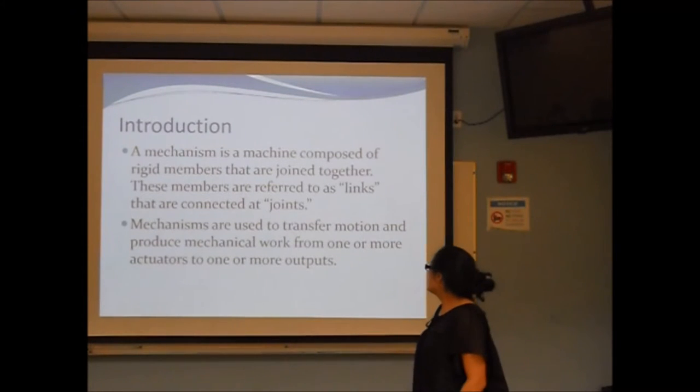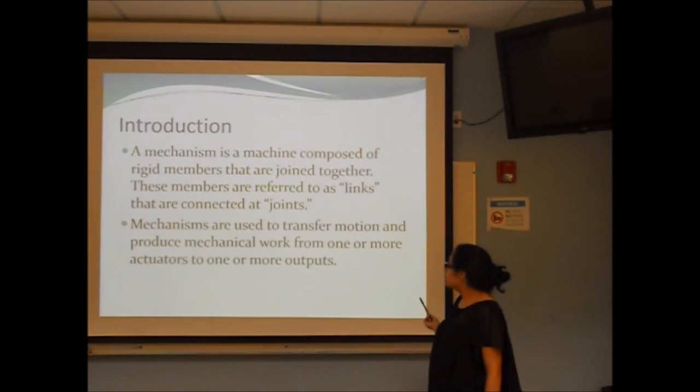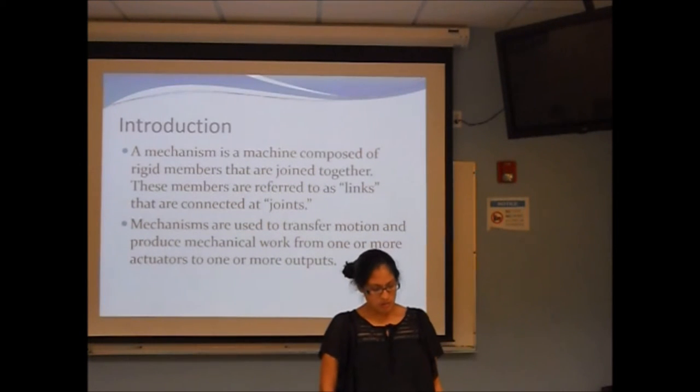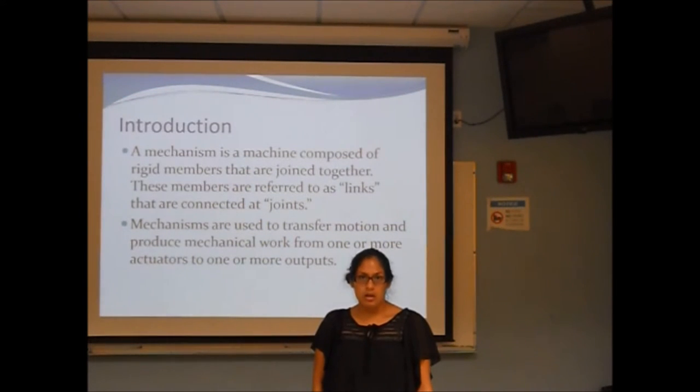A mechanism is used to transfer motion and produce mechanical work from one actuator to one or more outputs. Reuleaux came up with the term kinematic joint, known as a pair, and divided it into two: a lower and a higher joint. The lower joint is between two rigid bodies that occur at every point of one or more segments, versus the higher one which is only isolated at a point along the segments.